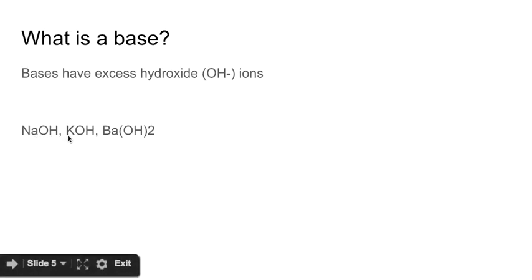So sodium hydroxide, potassium hydroxide, barium hydroxide, they all have that OH. And when you put them in a solution, they will dissociate. The OH ions will be by themselves. And this metal will be just a positive ion by itself.